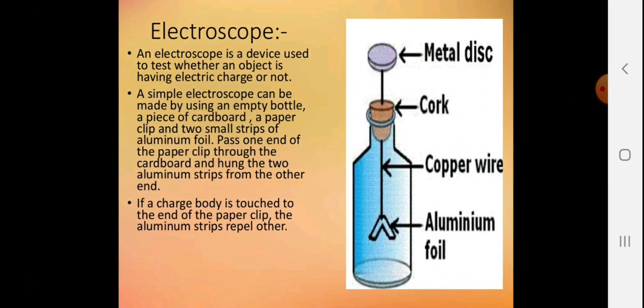This is the electroscope. You can see the metallic disc at the top and aluminum foil at the end. An electroscope is a device used to test whether an object has electric charge or not.